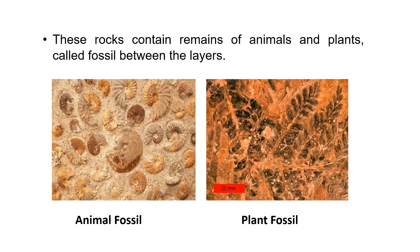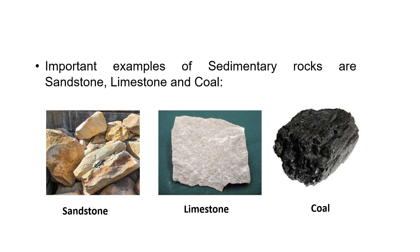These rocks contain remains of animals and plants. Dead plants and animals are carried along with fragmented rocks and sedimentation happens. From the picture you can see animal fossils — mostly sea animals — showing how sedimentation happened on the seabed. There are also plant fossils. Important examples of sedimentary rocks are sandstone, limestone, and coal.